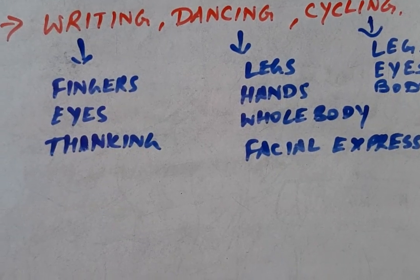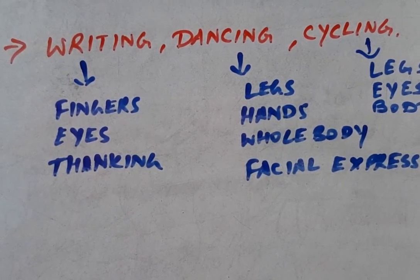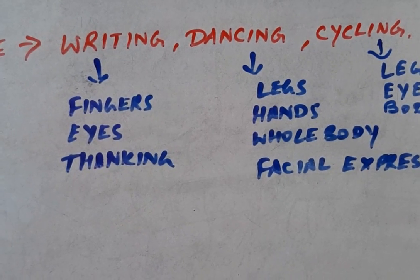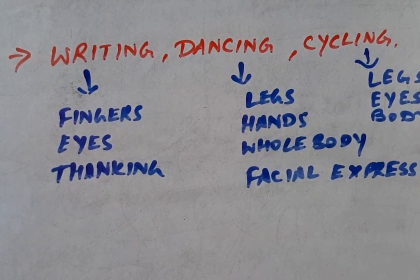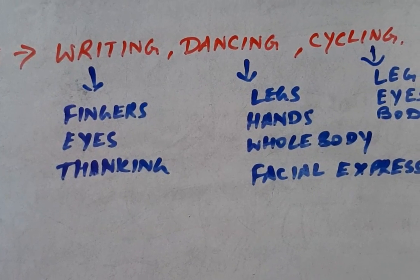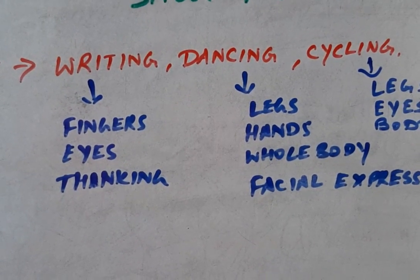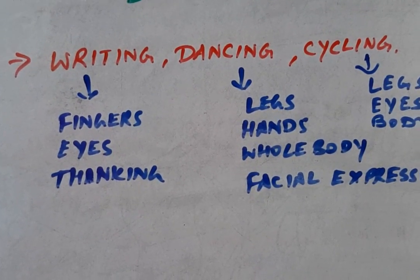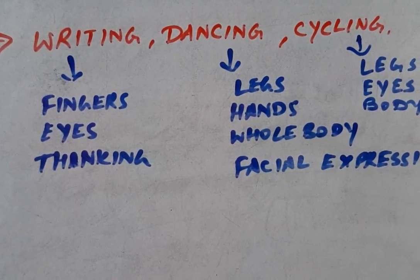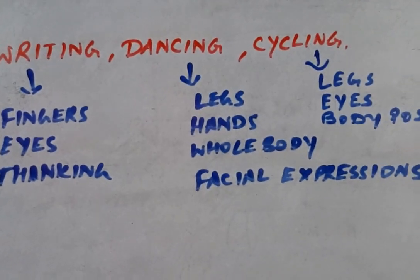When you are writing, you use your fingers to grip the pen or pencil. Your eyes help you write and see what you are writing — if there is any error, you correct it. So your fingers, eyes, and the thinking part, which is mainly controlled by the brain, are all working together.